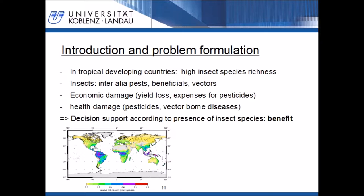Dependent on the behavior of the organism, an insect can be a pest in the agricultural process, like locusts, a vector for diseases, like the anopheles mosquito for malaria, or a beneficial, like the larva of some beetles.